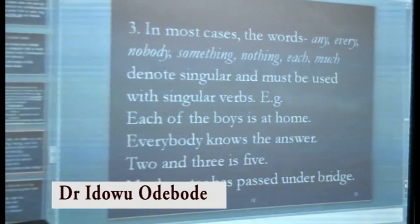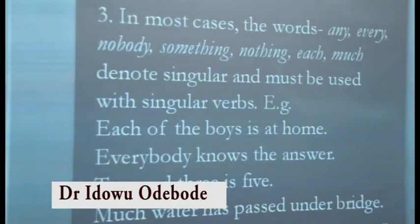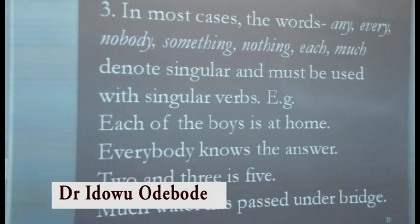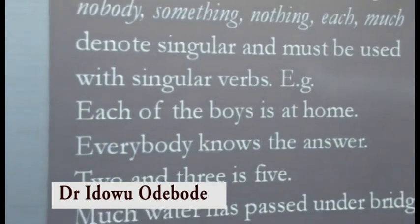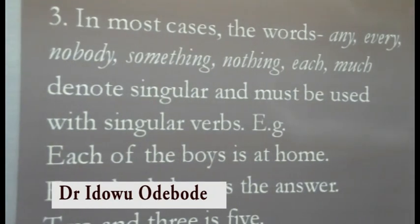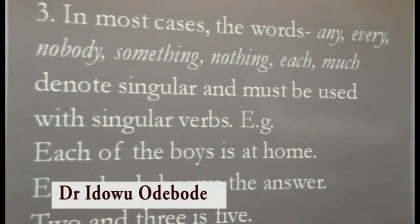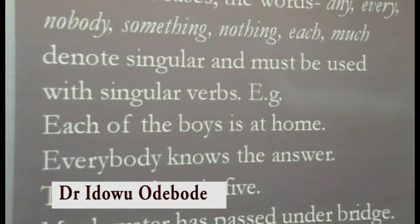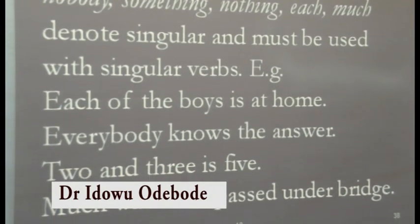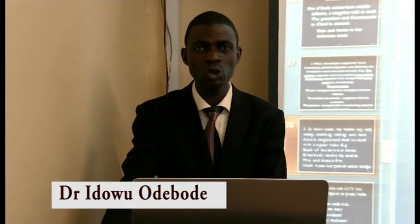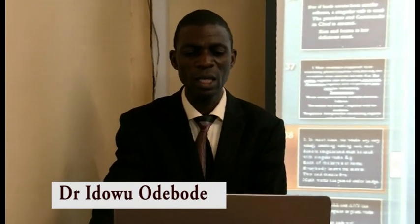Rule 3: In most cases, the words 'any', 'every', 'nobody', 'something', 'nothing', 'each', 'much', and so on denote singular and must be used with singular verbs. Examples: 'Each of the boys is at home.' 'Everybody knows the answer.' 'Two and three is five.' 'Much water has passed under the bridge.'